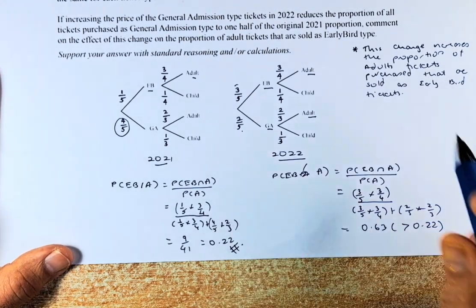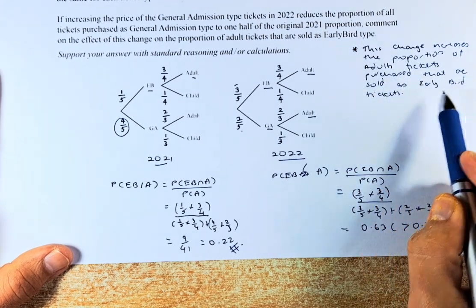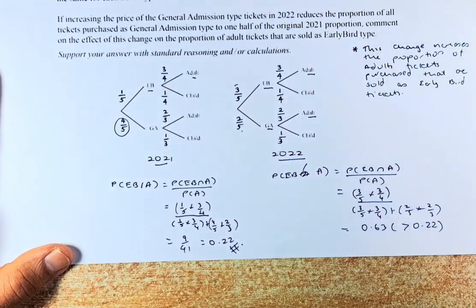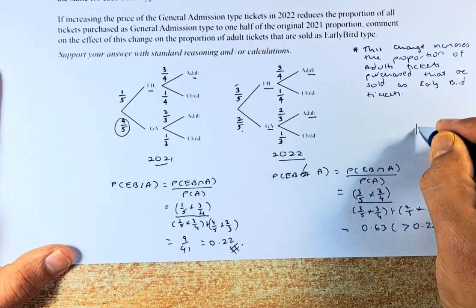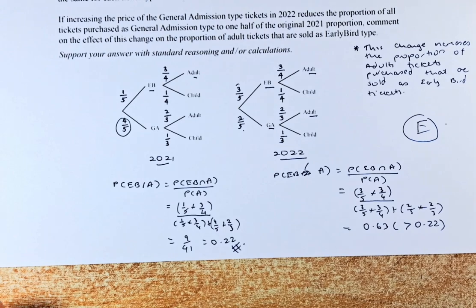So to answer the question, we say this change increases the proportion of adult tickets purchased that are sold as early bird tickets. So if you can answer this whole process, you get an excellence in this paper and an E7. So have a go at it again and I'll see you in the next one.